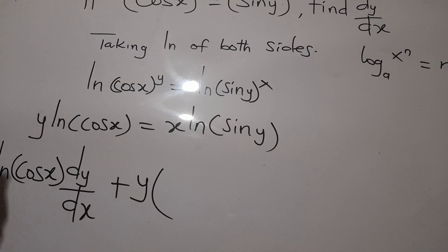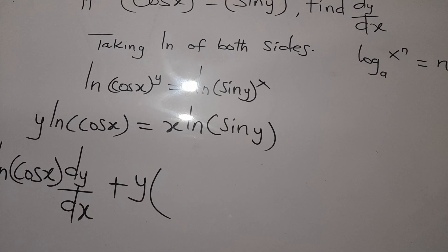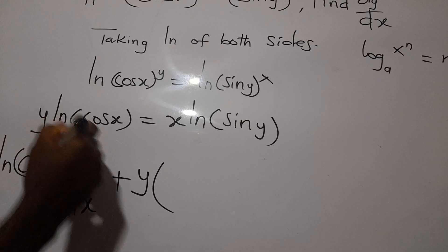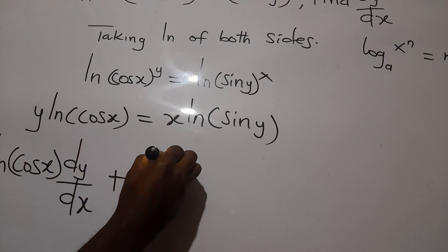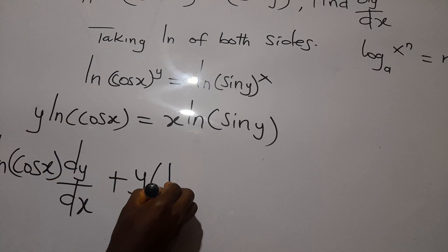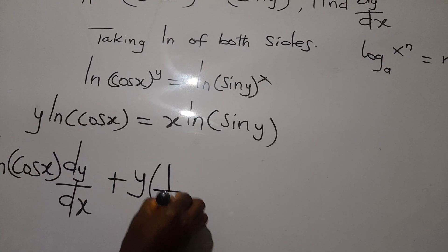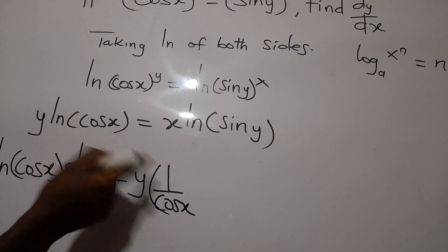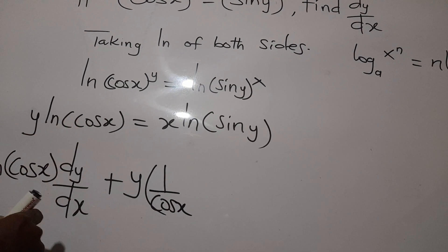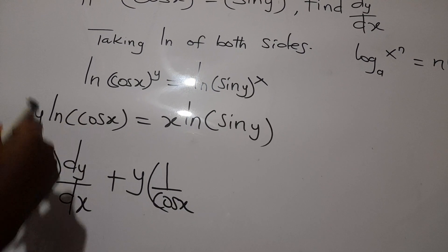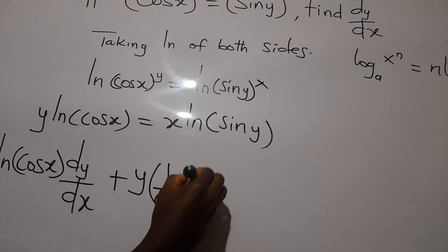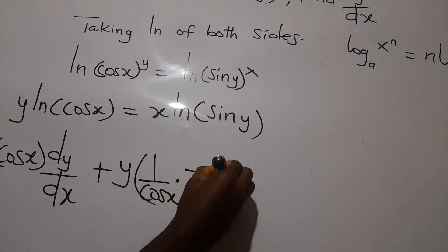Then plus, we keep y and differentiate ln(cos x). Remember how to differentiate logarithmic functions: you reciprocate the function, giving 1/cos x, then differentiate cos x and multiply — differentiating cos gives negative sin x.